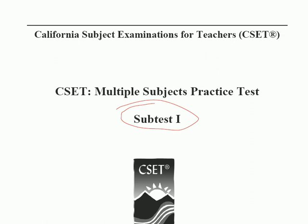My suggestion is that you aim for minimum scores on each part of the subtest. Subtest one has language arts on one side and social studies on the other. I recommend aiming for a minimum of 17 correct on language arts and 17 correct on social studies. You'll also need to do reasonably well on the essays, which I'll review separately. Today will just be the multiple choice, and this discussion is going to concern language arts only.